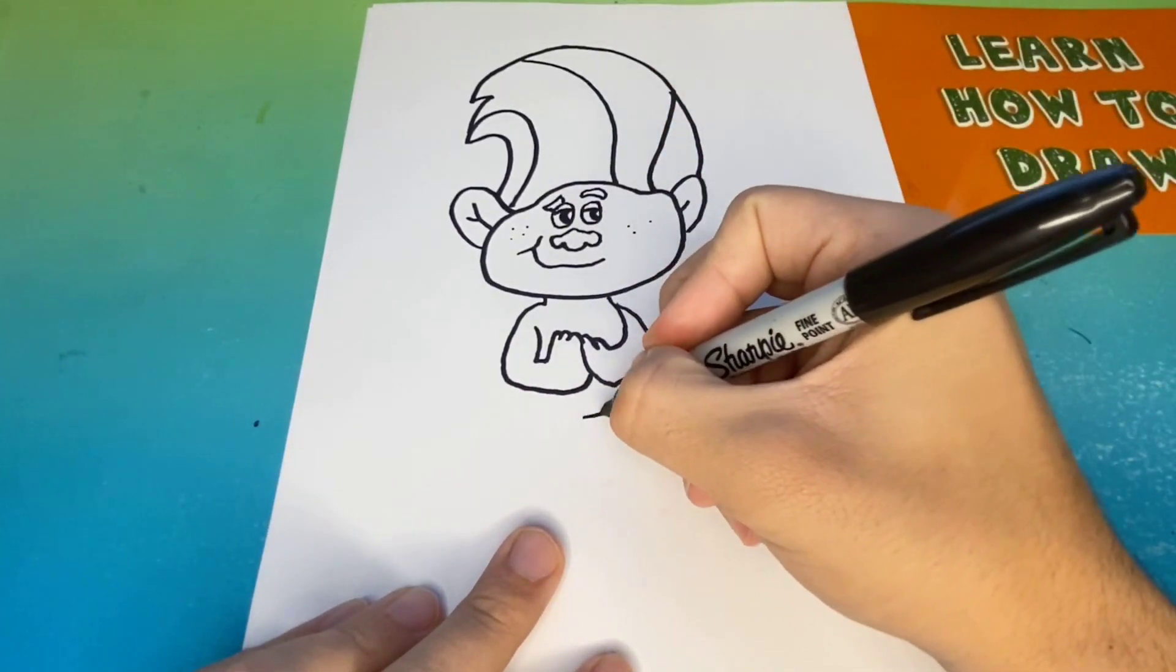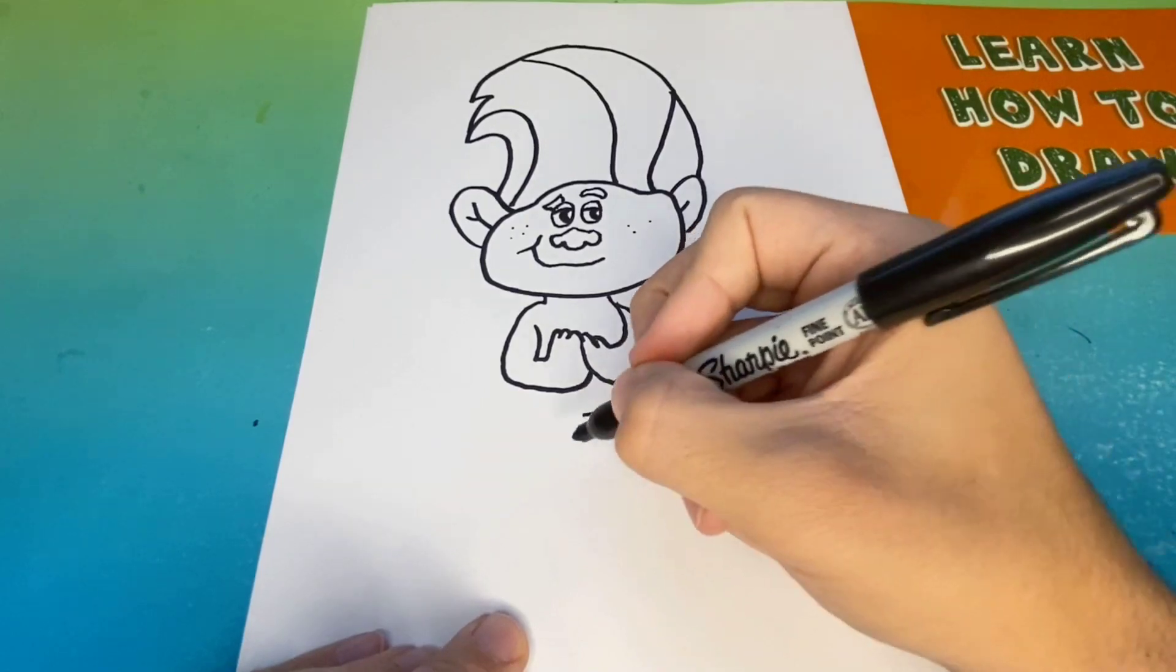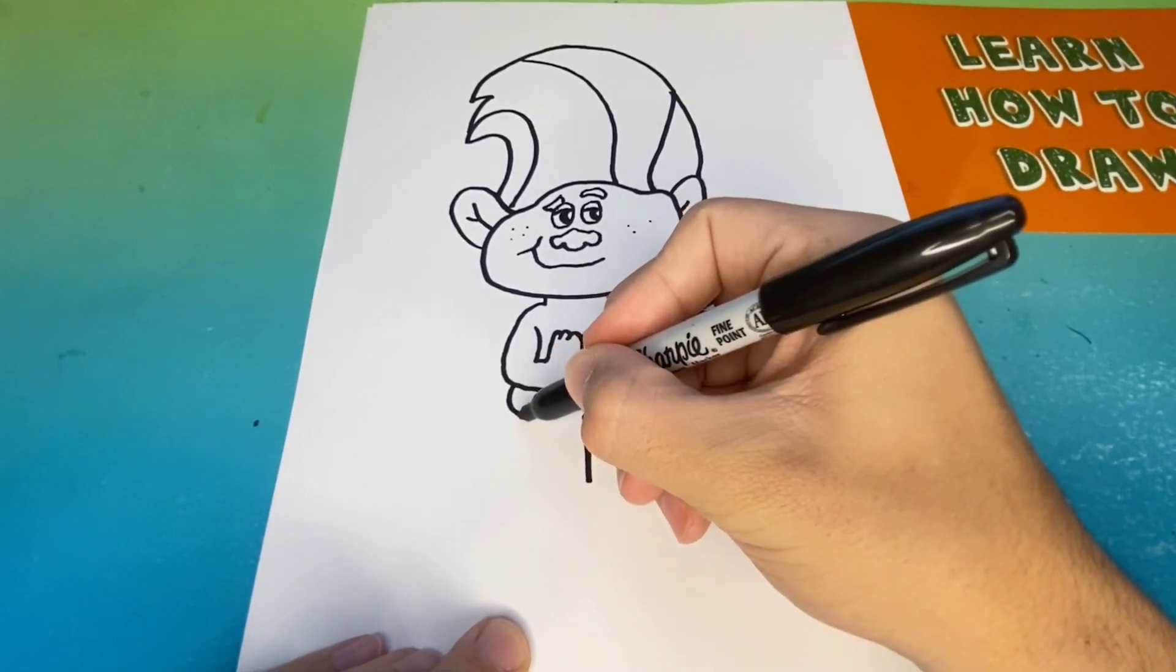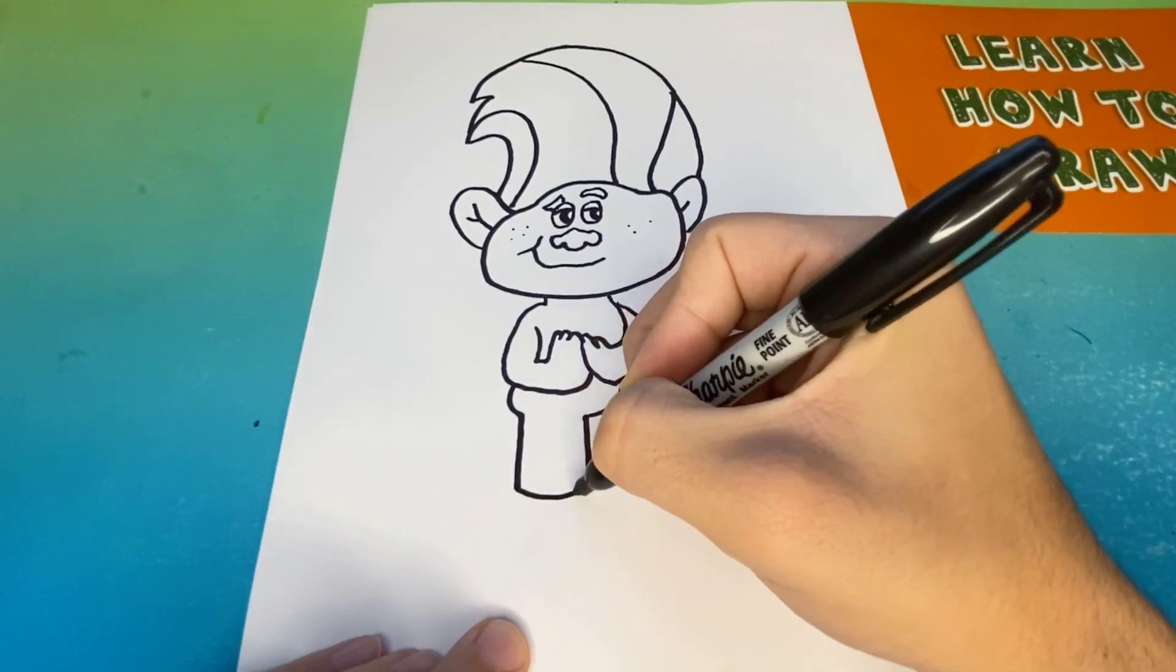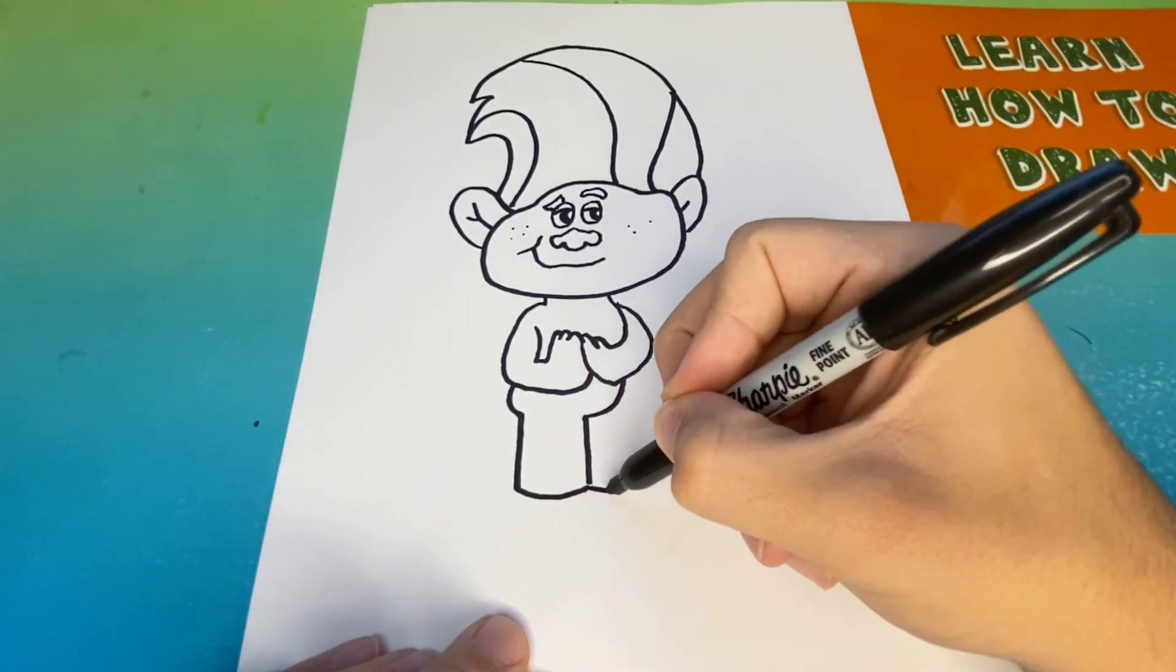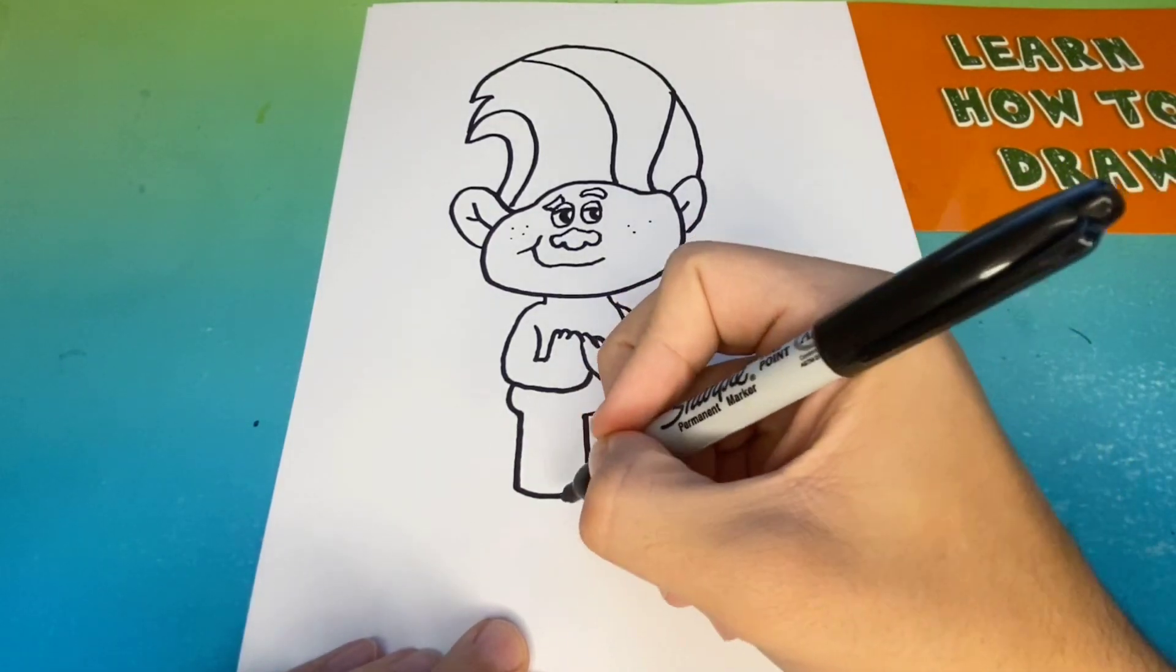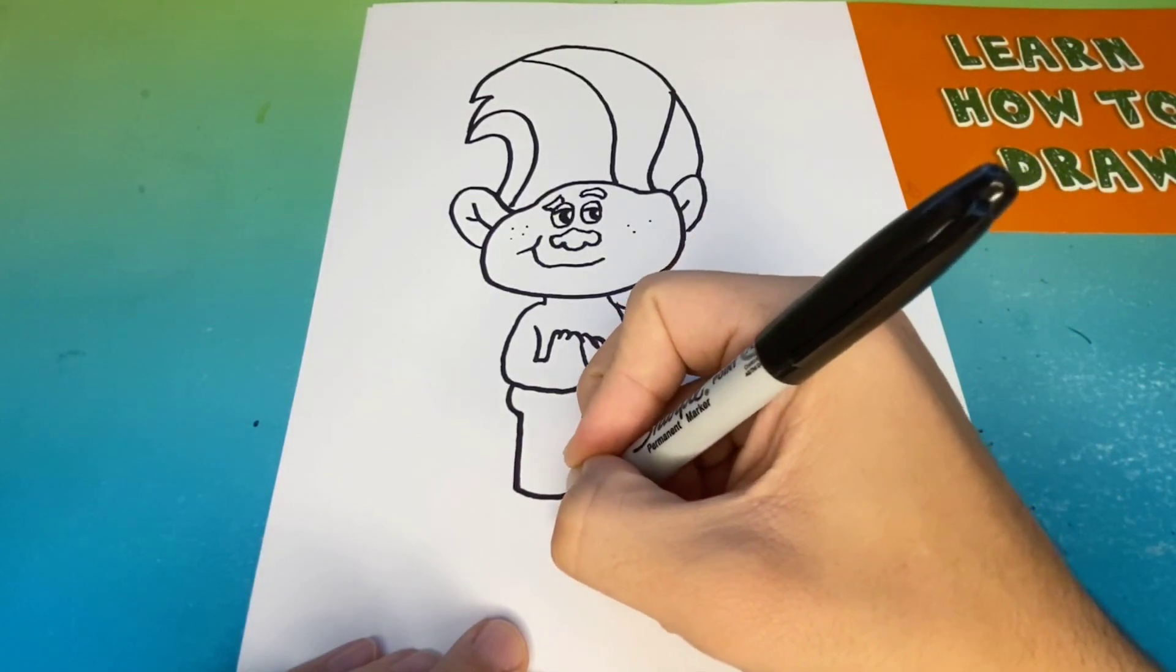Awesome. Once we finish the arms, we're going to move a little bit lower where we will begin to make the legs. We're going to give Creek a total of four toes on each foot.